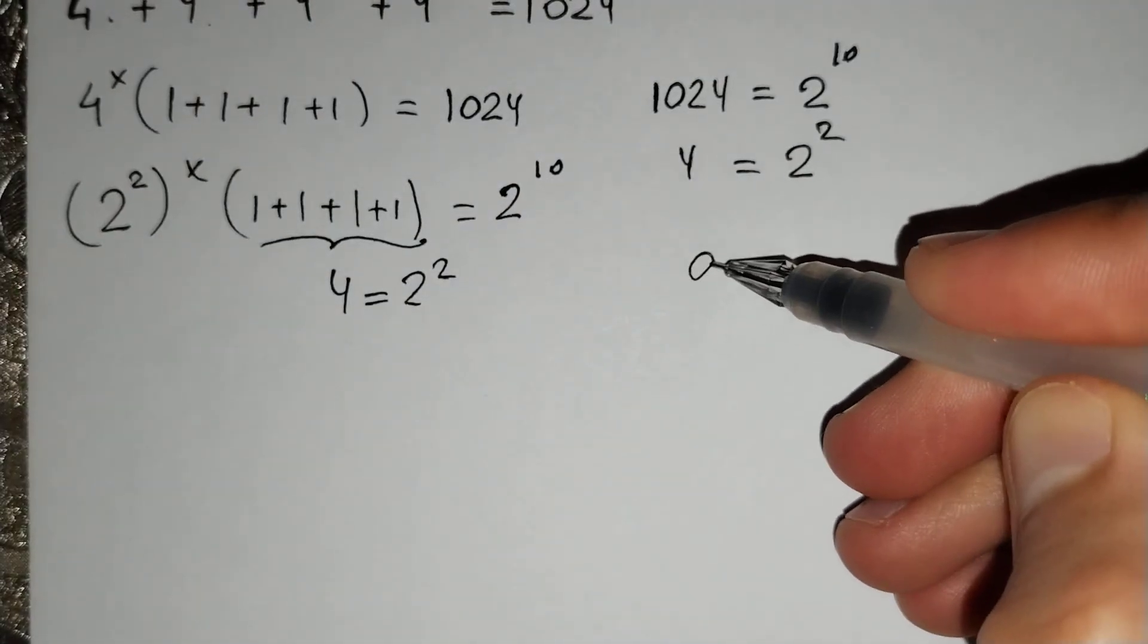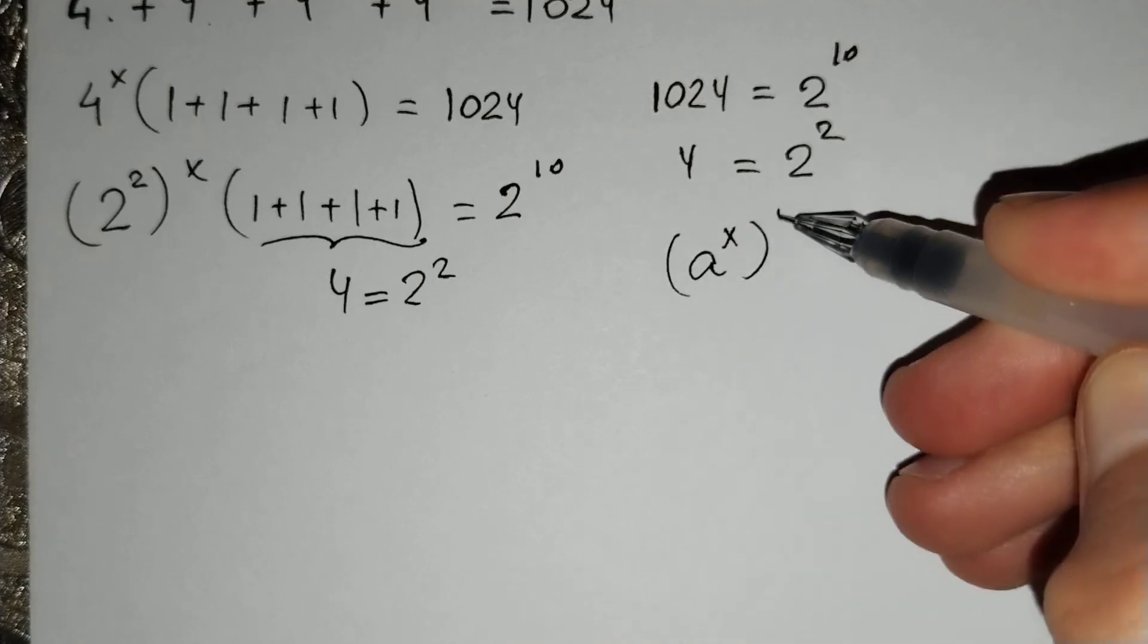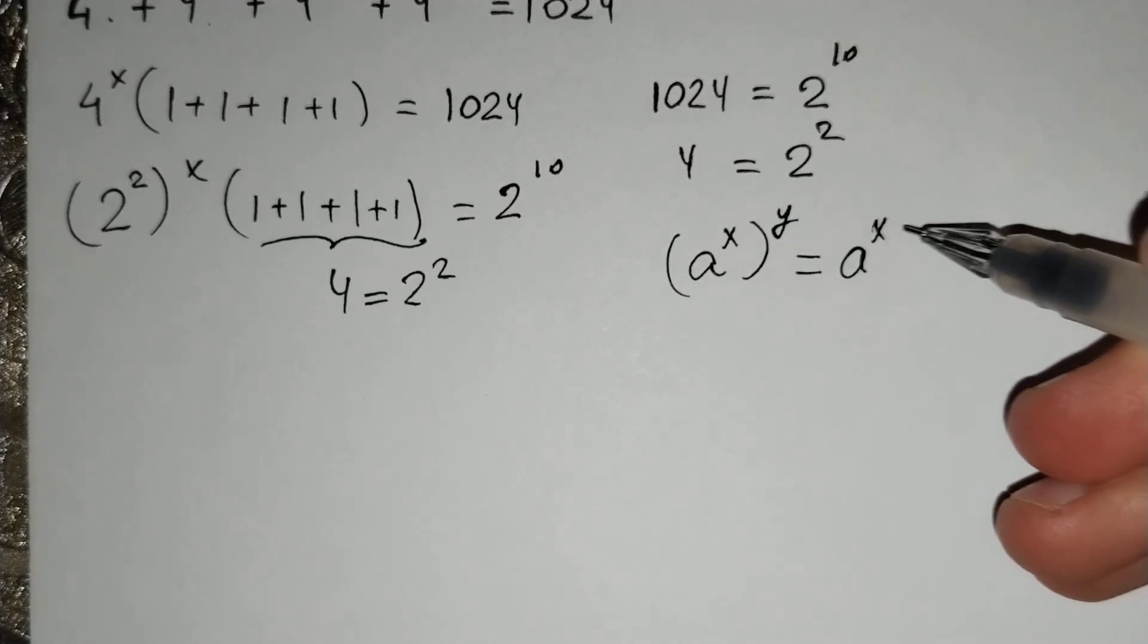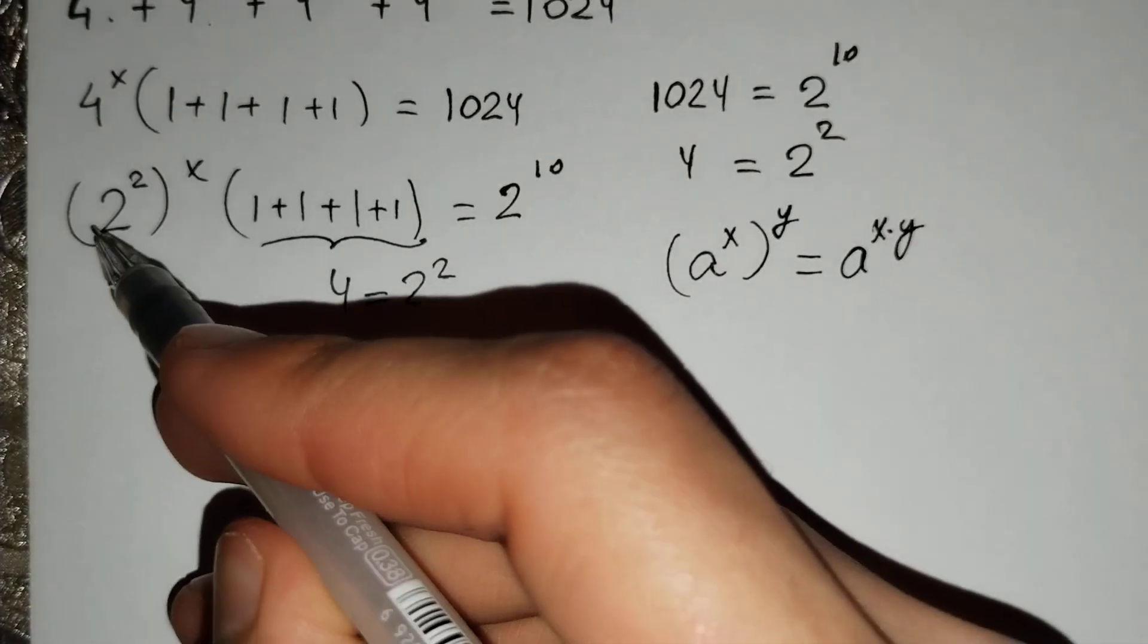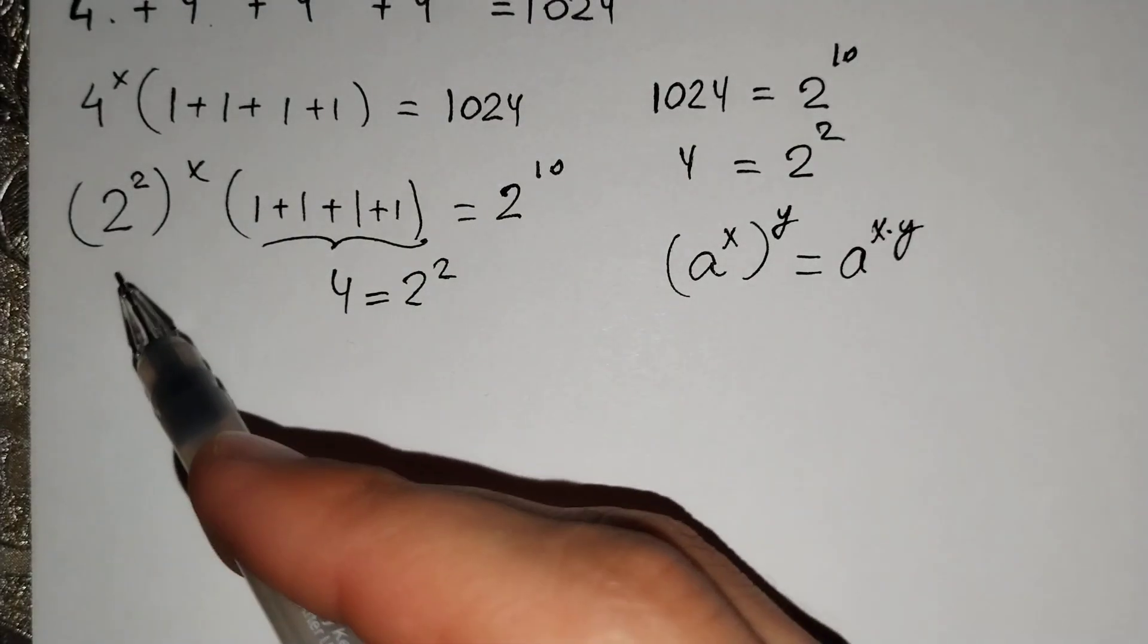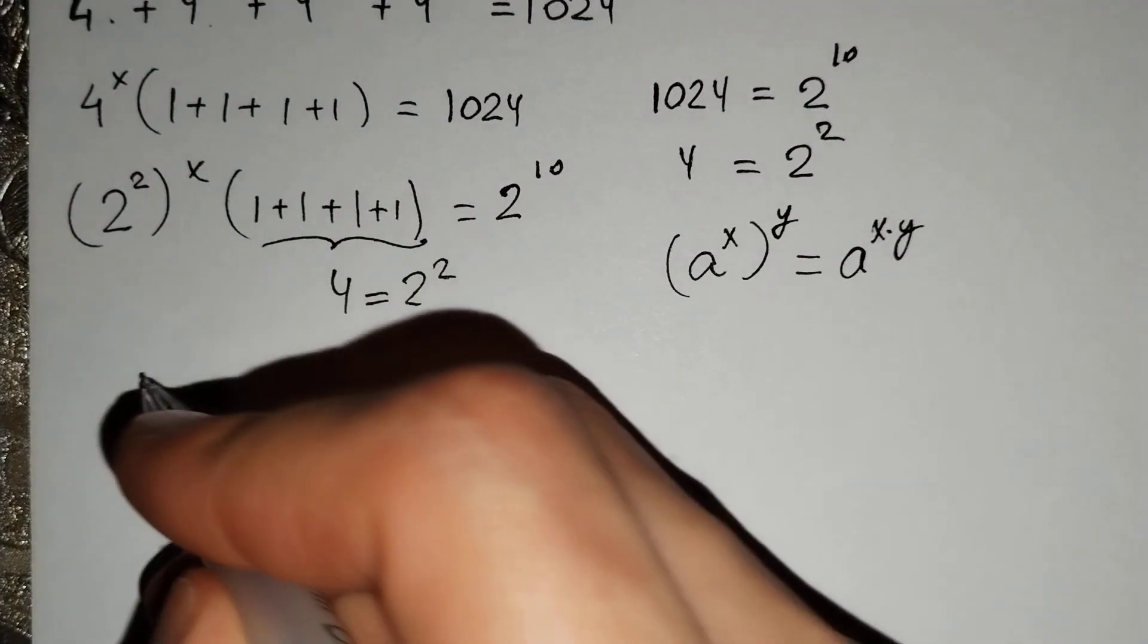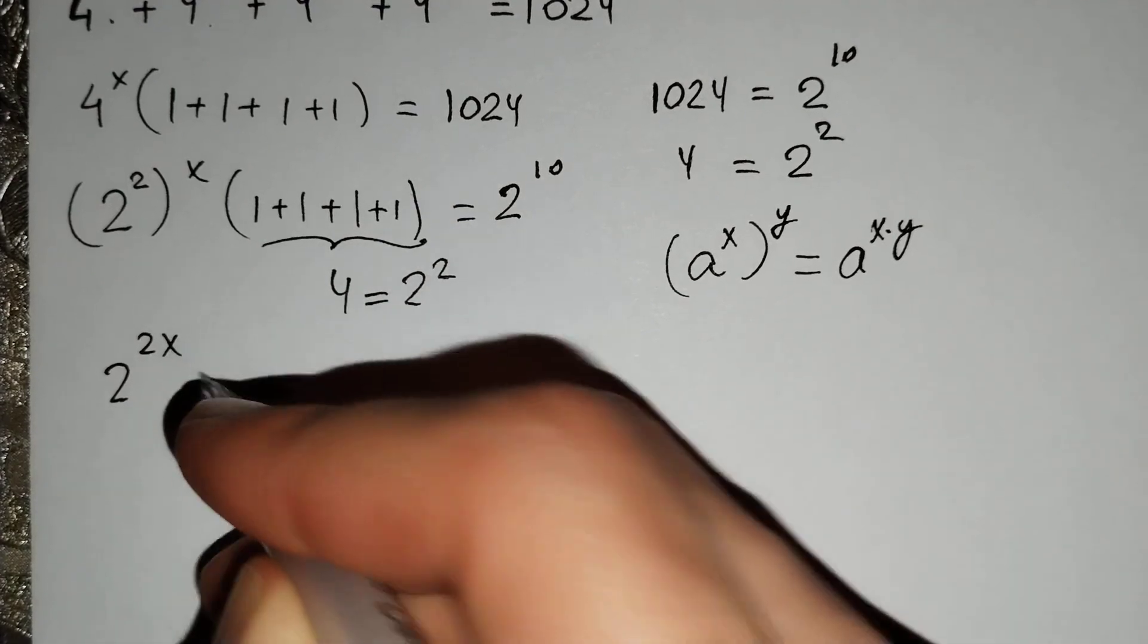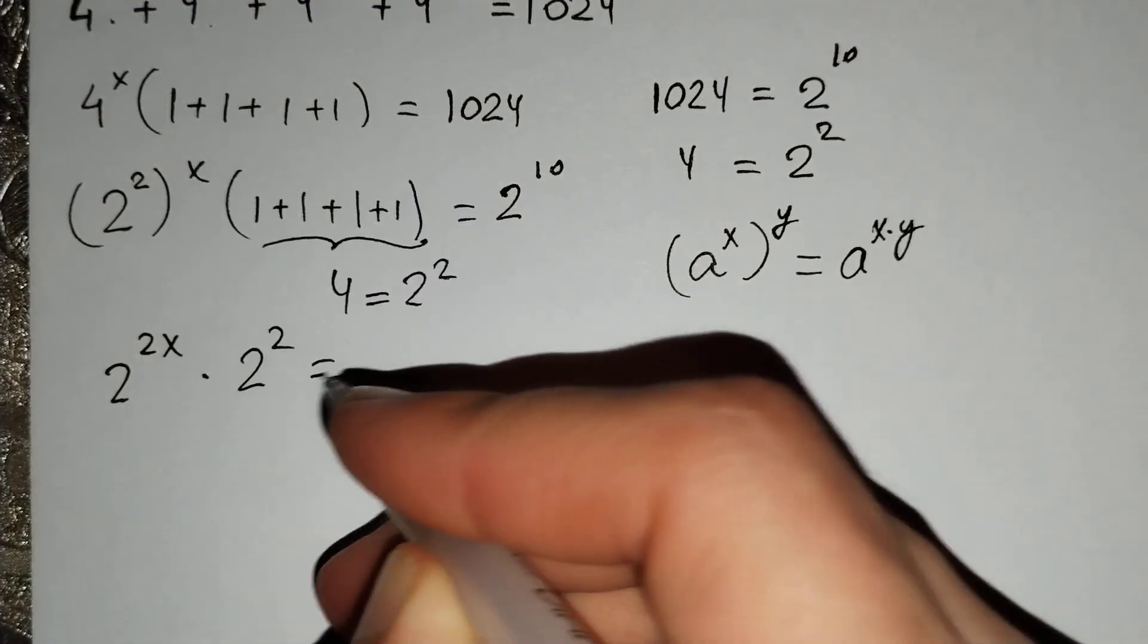Then, the exponent rule: a^(x·y) = a^(xy). For this formula, (2^2)^x = 2^(2x), so 2^(2x) · 2^2 = 2^10.